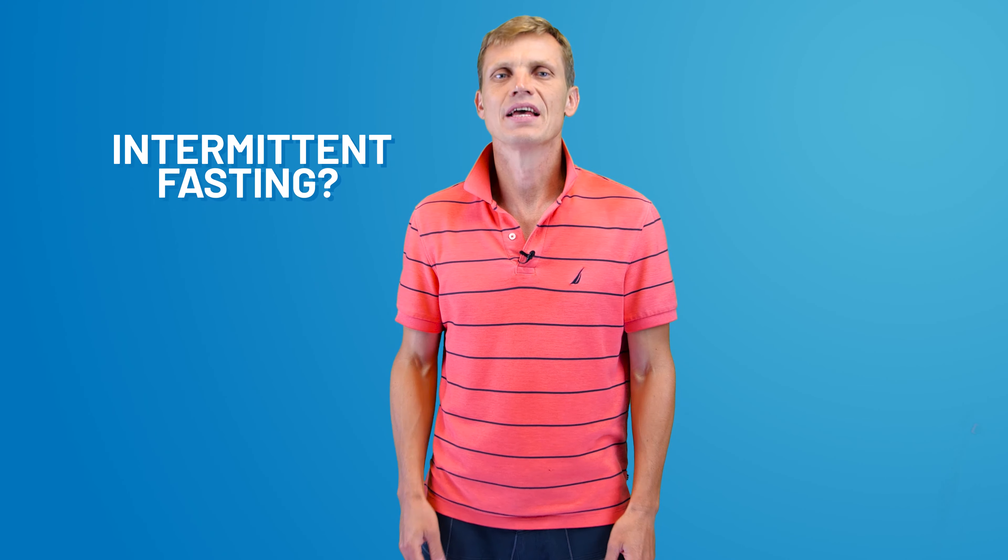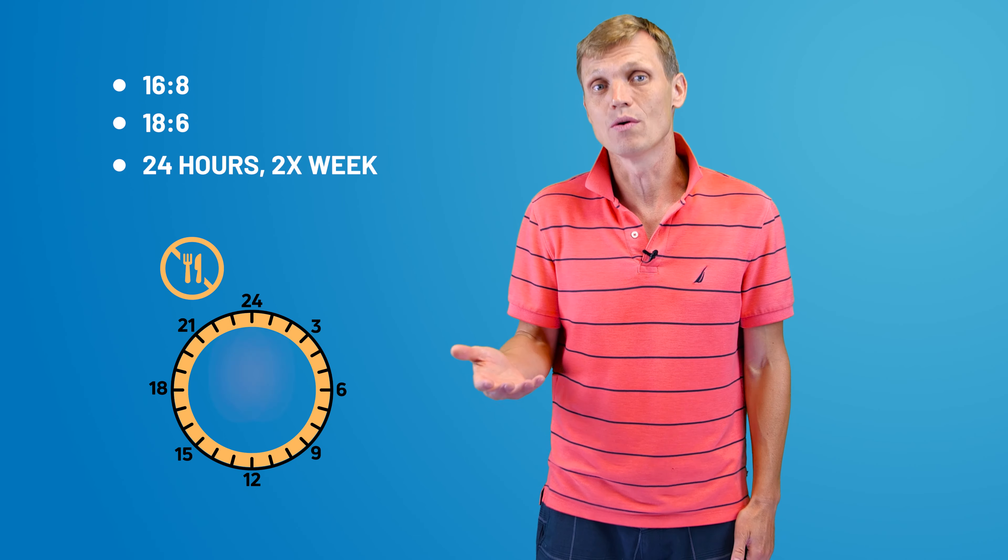What is intermittent fasting? Intermittent fasting or simply IF is an eating pattern that cycles between periods of fasting and eating. In the conventional sense it's not a diet. You've probably heard about the most common intermittent fasting method 16-8. That is daily 16-hour fast, like fasting from 6 pm to 10 am the next day. Examples of other IF methods are 18-6 and fasting for 24 hours like twice a week. Intermittent fasting does not specify which foods you should eat, but rather when you should eat them.